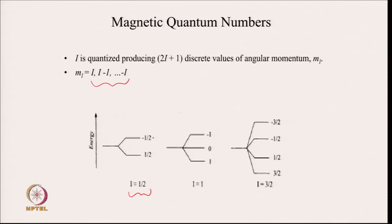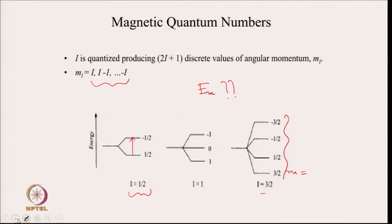If I = 1, then you have 3 values: 1, 0, and −1. If I = 3/2, then you have m values of 3/2, and so on. These are all different values of m. Now, if I want to go from one level to another, the ΔE can be calculated because we know the energy of the mth level. Energy is −mℏγB₀, so ΔE can be calculated.